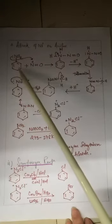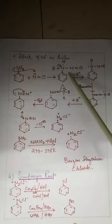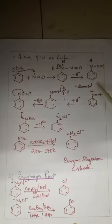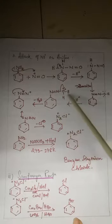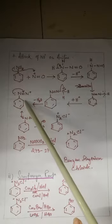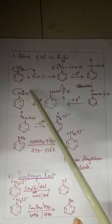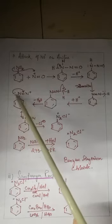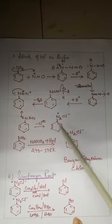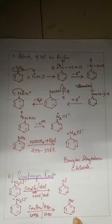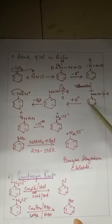Step three is the attack of the nitrosonium ion on aniline. The lone pair on the nitrogen of aniline attacks the nitrosonium ion to form an intermediate. Through rearrangements and reaction with hydrogen, water is eliminated to give a benzene ring with a positive charge and double bond. The lone pair then forms a triple bond, and finally chlorine is added to give benzene diazonium chloride.